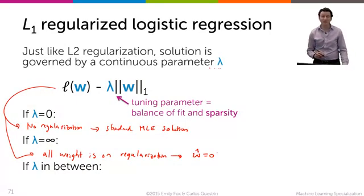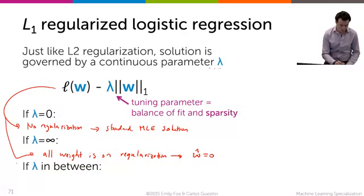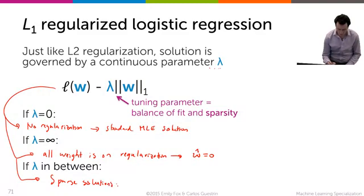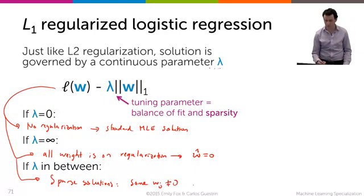Now the case that we really care about is when lambda is somewhere between zero and infinity, which leads to what we call sparse solutions, where some w_j's are not going to be equal to zero, but hopefully many other w_j's, and this is our estimate, so w_j hats are going to be exactly zero.